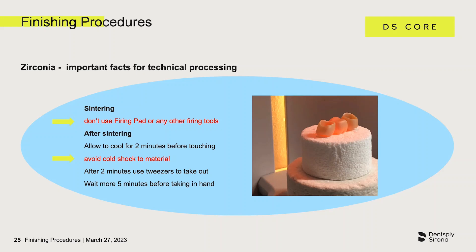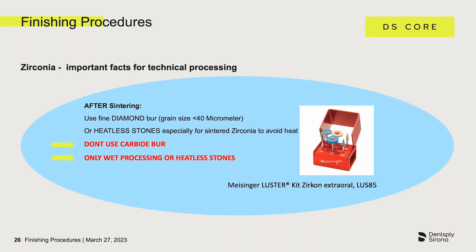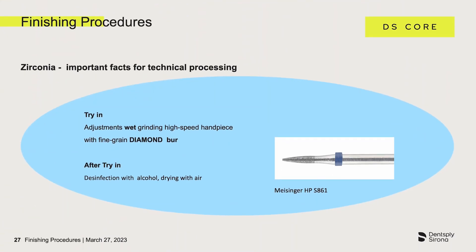Avoid touching the very hot restoration with a cold instrument, as this could lead to micro fractures. After the cooling time in the speed fire kiln program has elapsed, the crown should be grasped with tweezers and placed on the surface in front of the speed fire kiln to cool for another 5 minutes. In contrast to the whiting, the sintered restoration can be processed with fine grain diamond burrs, and water cooling should definitely be used during processing. Sintered zirconia should never be machined with carbide drills and without water cooling. During intraoral try-in, zirconia should be processed with fine grain diamonds and water cooling.